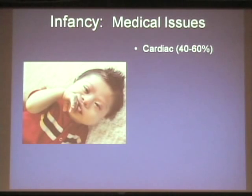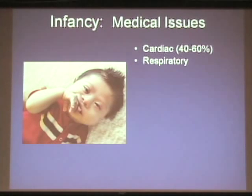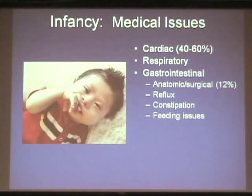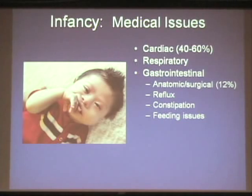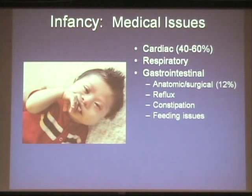Other medical issues are common — approximately half of children with Down syndrome will have some type of congenital heart problem, which may need surgery or just monitoring. They're more prone to lung and breathing difficulties. The stomach can be malformed and may require surgical repair. Constipation is an extremely common problem throughout life for people with Down syndrome. It may sound minor, but it causes distended bellies, pain, loss of appetite, and can interfere with toilet training because children become fearful.